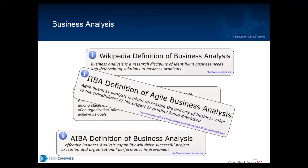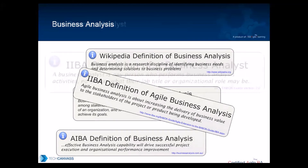So what is agile business analysis? Agile business analysis is about increasing the delivery of business value to the stakeholders of the project or product being developed. Whenever we talk about agile, we'll definitely talk about business value to the stakeholders. There are different methodologies of calculating business value, and we'll try to cover that.